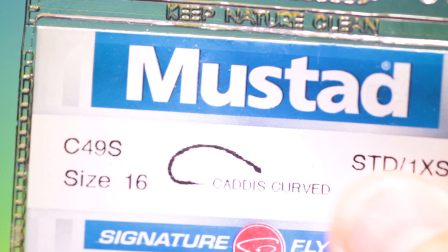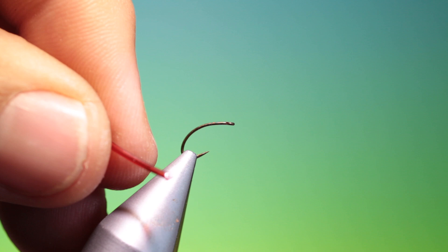We'll start with the Mustard C49S size 16 curved caddis. This is my free swimming blood worm pattern. We take some blood red lava lace and a lighter.